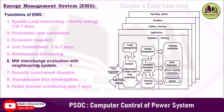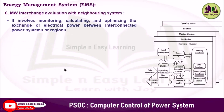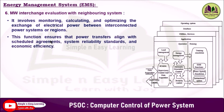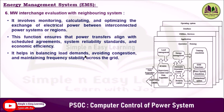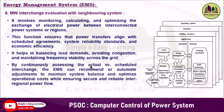The sixth function is megawatt interchange evaluation with neighboring systems. It involves monitoring, calculating, and optimizing the exchange of electrical power between interconnected power systems or regions. This function ensures that power transfer aligns with scheduled agreements between neighboring regions or system reliability standards and economic efficiency. It helps in balancing load demand, avoiding congestion, and maintaining frequency stability across the grid. By continuously assessing actual versus scheduled interchange, the EMS can recommend or automate adjustments to maintain system balance and optimize operational cost while ensuring secure and reliable inter-regional power flow.